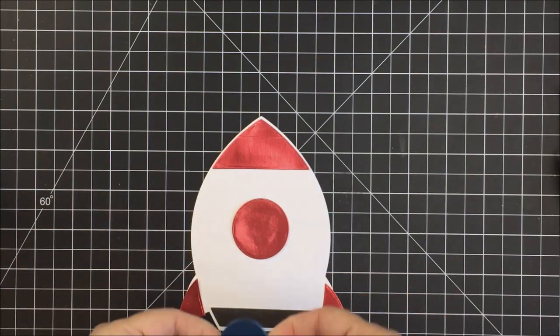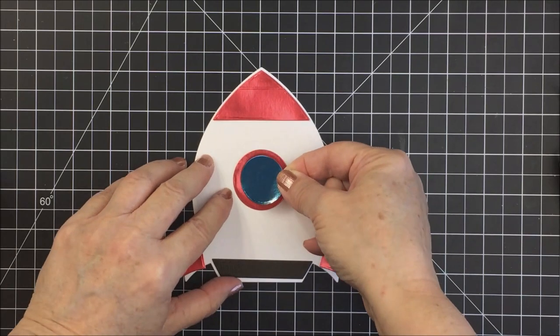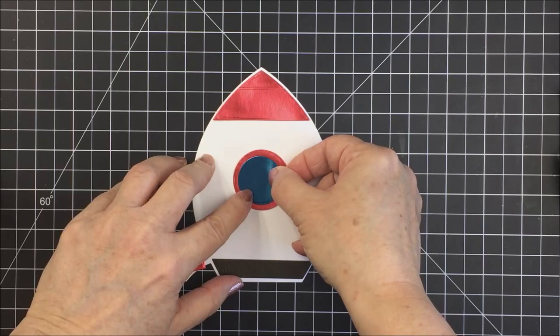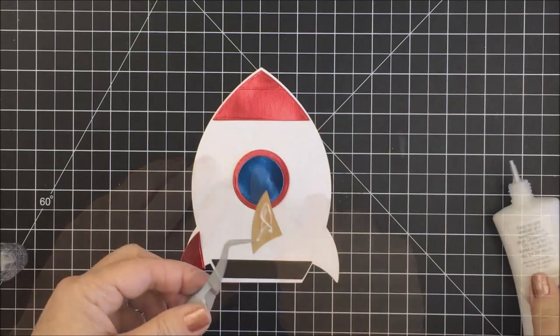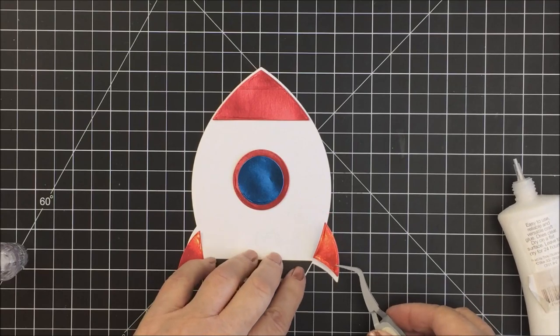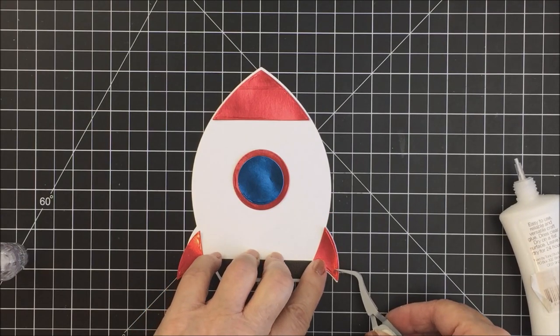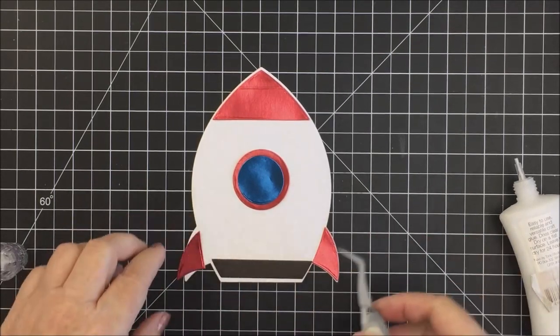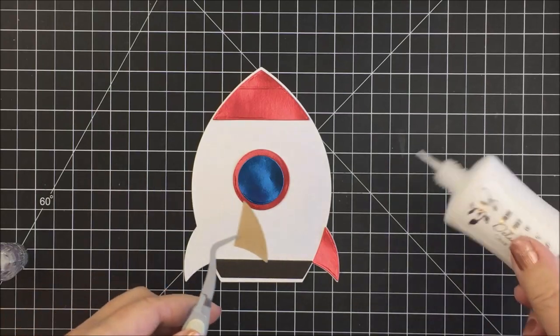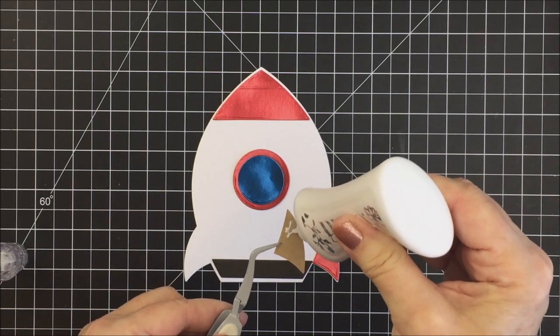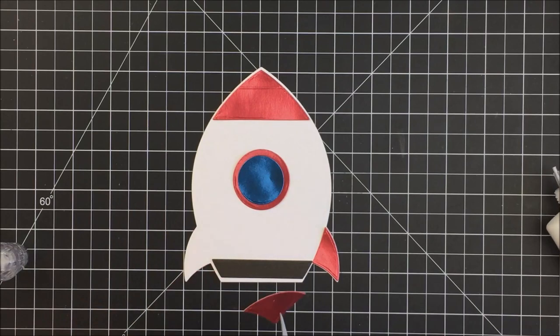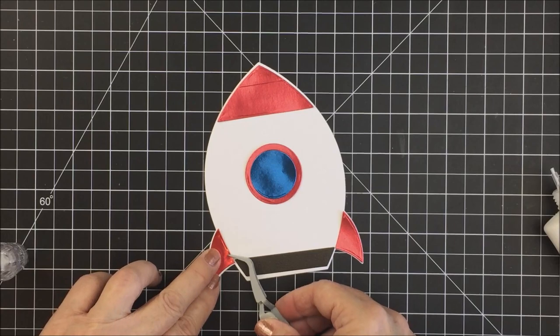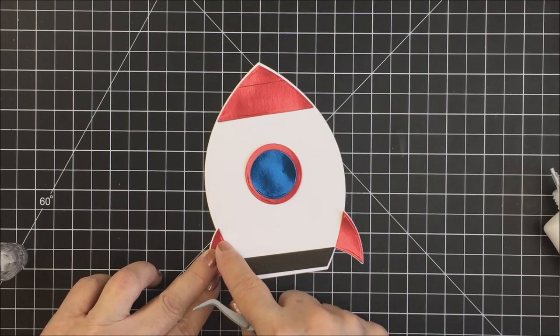I'm going to use some dimensional foam adhesive to pop up the blue metallic piece that's going in the center of that red circle, just to give it a little bit more dimension on the front of my card. Then I'm just going to go ahead and glue down all of the rest of those pieces that are embellishments for my little spaceship. I just love how this looks. I think it's totally adorable and this die pairs beautifully with the Far Out Friends stamp and die set.